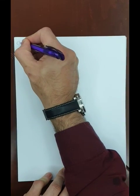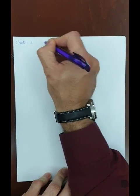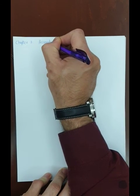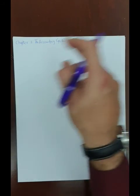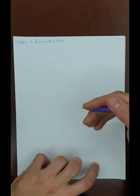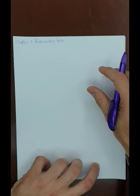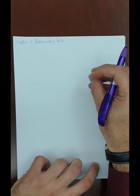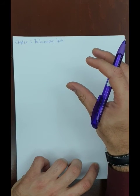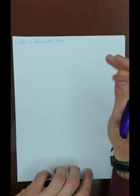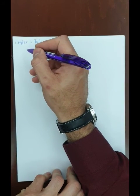Hello everyone, this is Chapter 3 from the financial accounting course. Chapter 3 is about the accounting cycle. In the previous two chapters, we introduced the economic role of accounting and described and summarized the three main financial statements that we prepare as accountants. In this chapter, we will learn the technical side of accounting and how to prepare these financial statements from scratch.